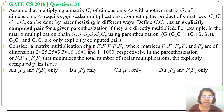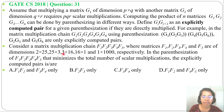Consider a matrix multiplication chain F1, F2, F3, F4, F5, where the matrices are of dimensions: F1 is 2×25, F2 is 25×3, F3 is 3×16, F4 is 16×1, and F5 is 1×1000 respectively.